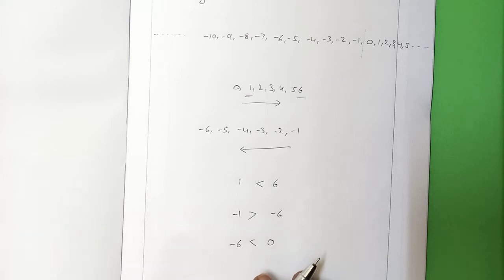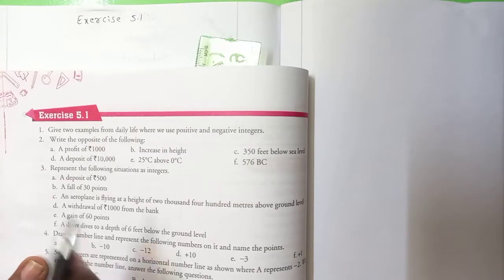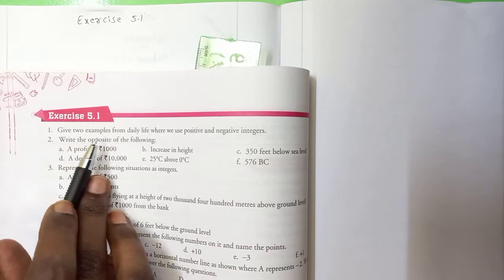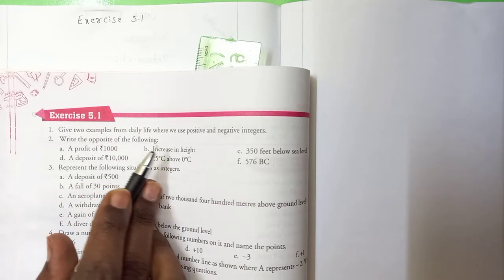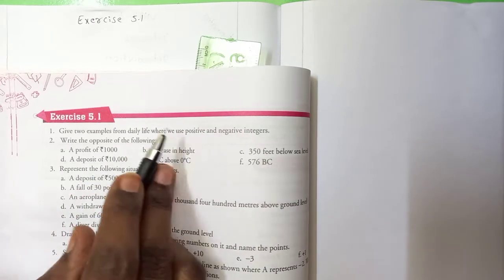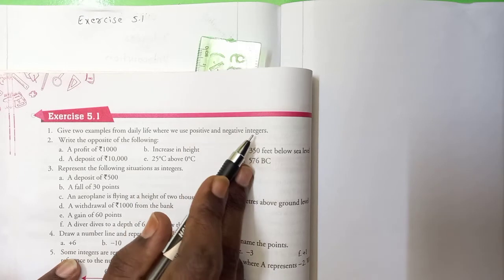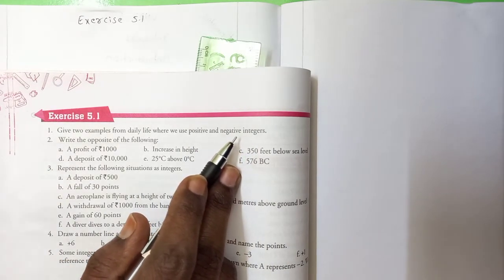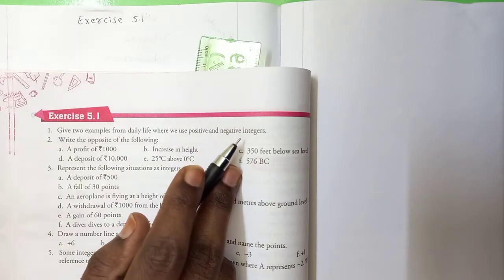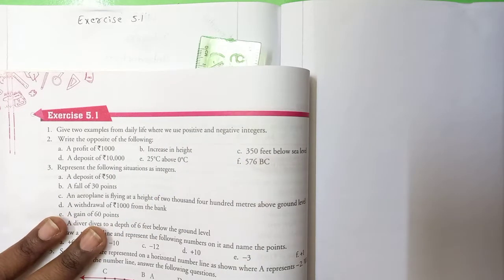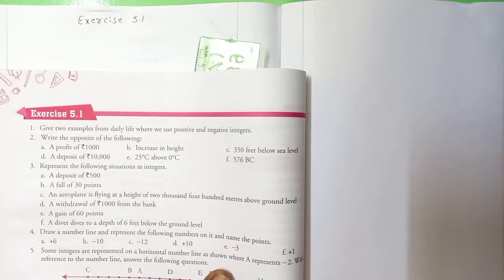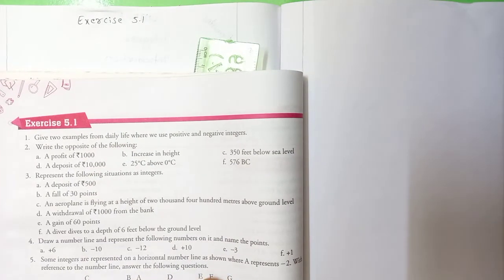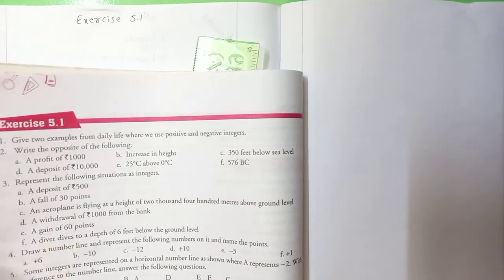This unit is actually very simple. You already know whole numbers. Now let us move to the first exercise in Unit 5 — exercise 5.1. First question: give two examples from daily life where we use positive and negative integers. They are asking us to write real-life situations where we see negative numbers.